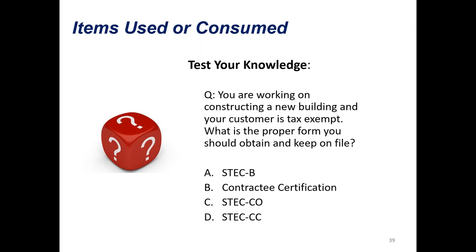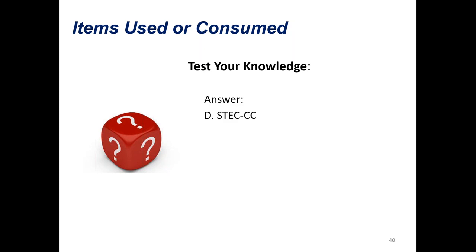Test your knowledge question: You're working on constructing a new building and your customer is tax-exempt. What's the proper form that you should obtain and keep on file? I'm going to go with D—the STEC-CC—because that's the one you get from your contractee. The STEC-CO is the one you fill out yourself. You are correct—the STEC-CC is the form you want to keep on file. As a contractor, it's really good practice to write the job number on the form; this will help you if you're audited so that the auditor can quickly reference your contract schedule to verify the job is tax-exempt.